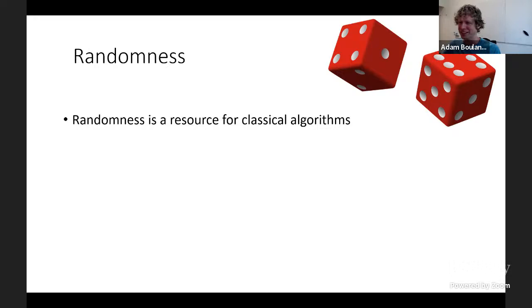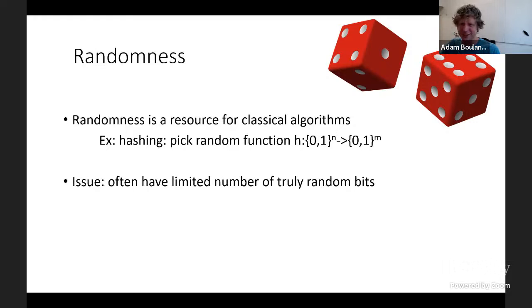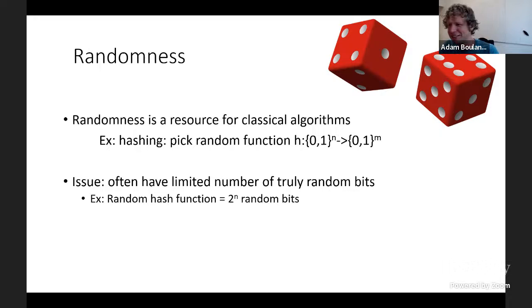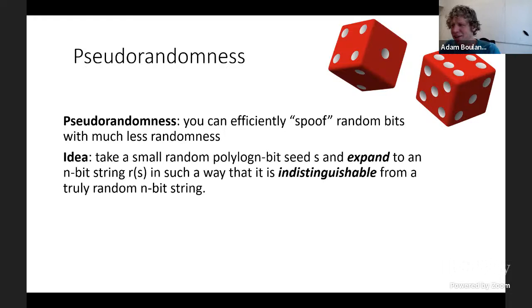The starting point for this talk is the notion of classical randomness. In classical algorithms, randomness is often viewed as a resource for computation. For example, if you're trying to run an algorithm that involves hashing for a functional search problem, you might want to pick a random hash function from N bits to N bits. A common issue in algorithmic applications is that you often have access to only a limited number of truly random bits—describing a truly random hash function requires exponentially many random bits.